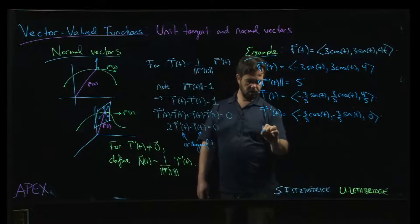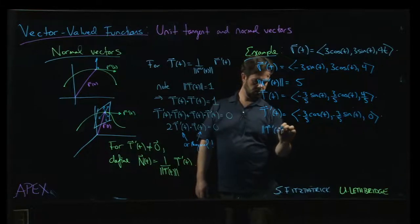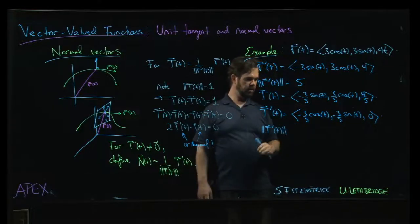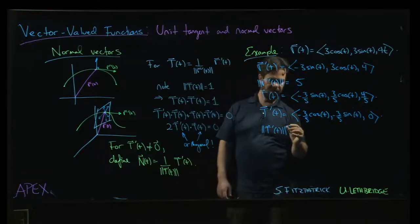So the magnitude of T prime is going to be 3 over 5.